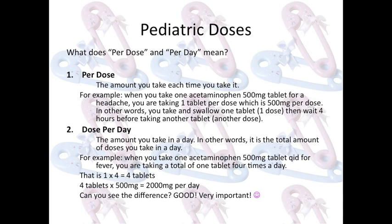What does per dose and per day mean? Per dose is the amount you take each time you take it. For example, when you take one acetaminophen 500 milligram tablet for a headache, you are taking one tablet per dose, which is 500 milligrams per dose. You take and swallow one tablet — that is one dose — then wait four hours before taking another tablet, another dose.